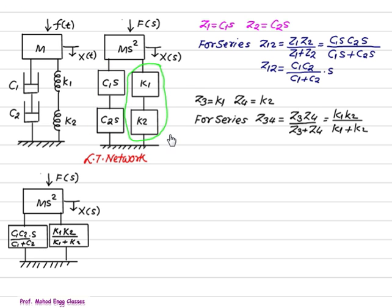Now, consider series arrangement of K1, K2. So, when Z3 is K1, Z4 is K2, resultant of Z3 and Z4 is Z34, which is the product upon the addition, K1 into K2 upon K1 plus K2. So, both these two are replaced by K1, K2 upon K1 plus K2. So, we have reduced the problem to single variable.